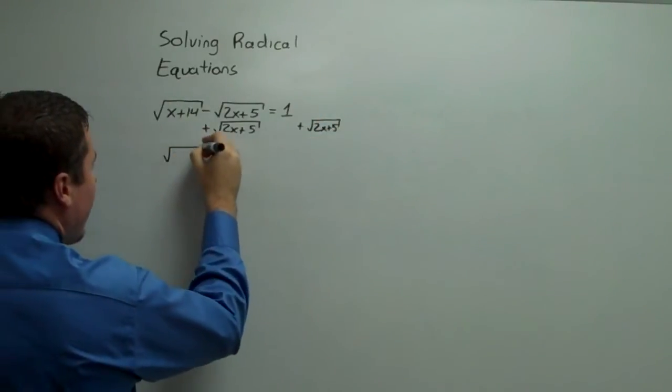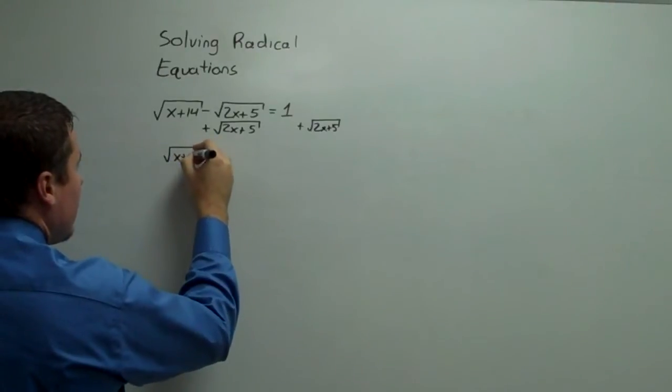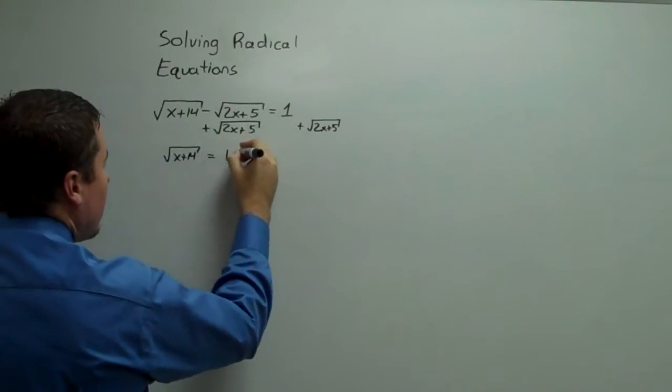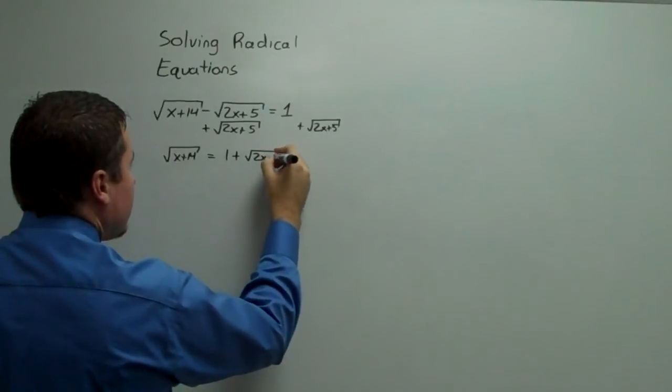All right, so now we have radical x plus 14 equals 1 plus radical 2x plus 5.